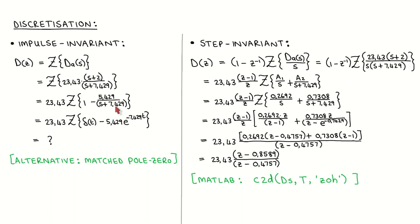However, there is no z-transform entry corresponding to a constant continuous time transfer function. We can see the reason for this by converting the constant transfer function to a time signal, which corresponds to a continuous time impulse. Sampling a continuous time impulse is undefined, which means that this designed analog controller has no impulse invariant discrete time form. To apply the idea of impulse invariant discretization to such a case, one could use the more sophisticated matched-pole-zero method, but we do not cover it in this module.